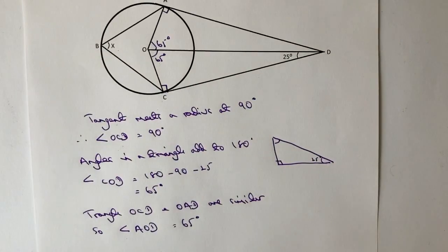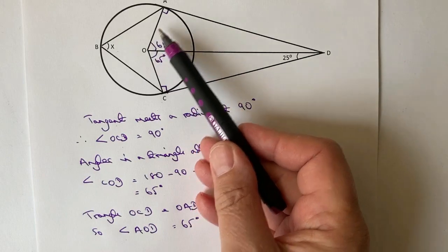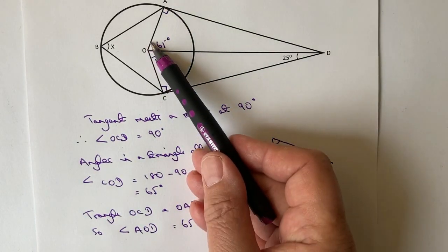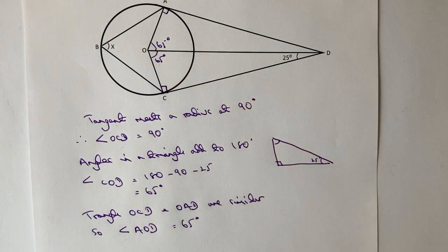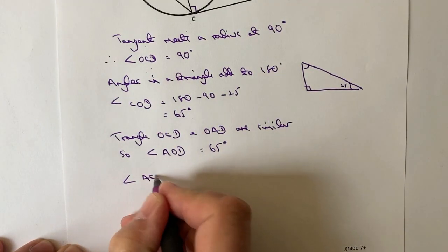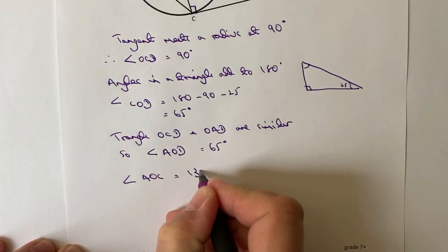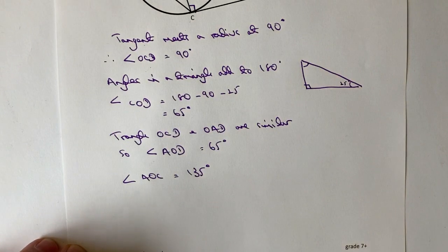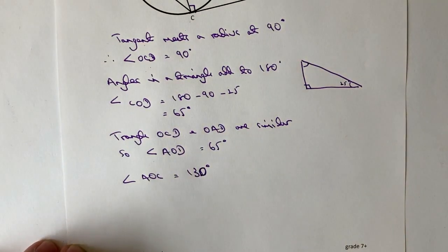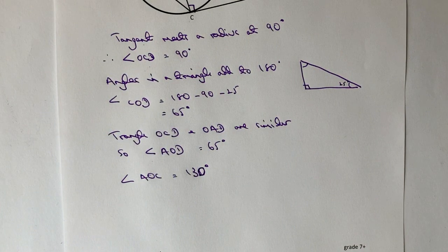Okay, so therefore if we join these two together we've got angle AOC which is going to be 65 add 65 which is going to be 130 degrees. Okay, so angle AOC equals—oh, beg your pardon, sorry—130 degrees, they're both 65, so therefore 130 degrees.